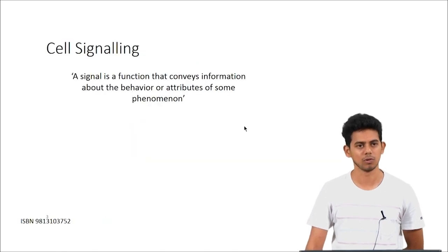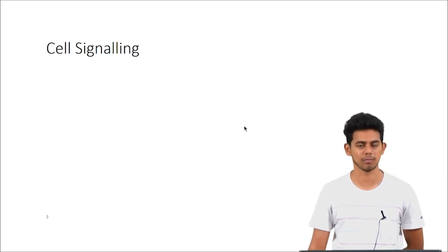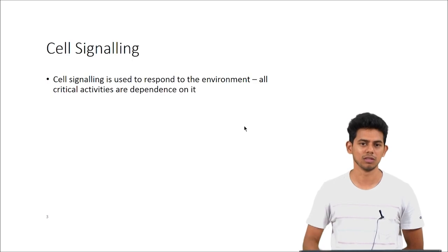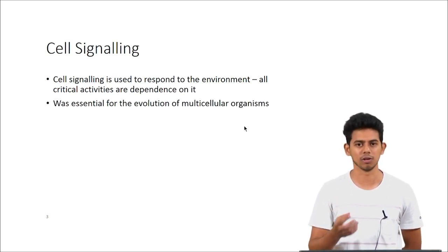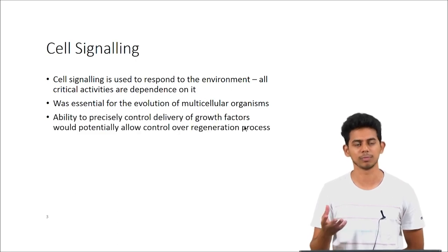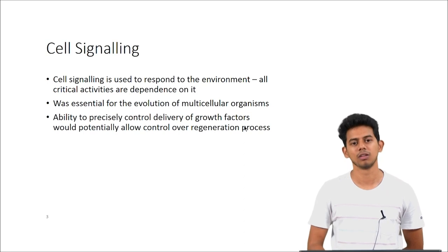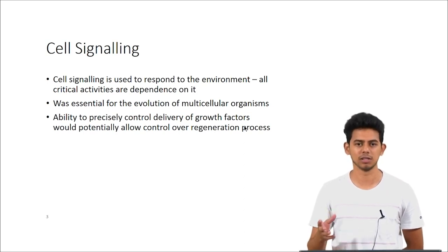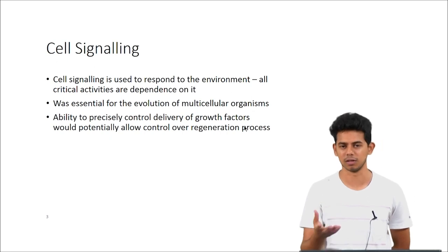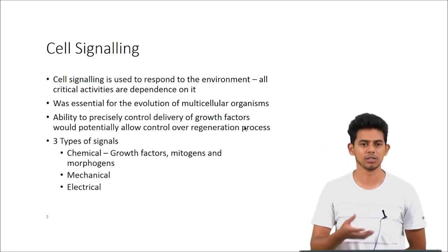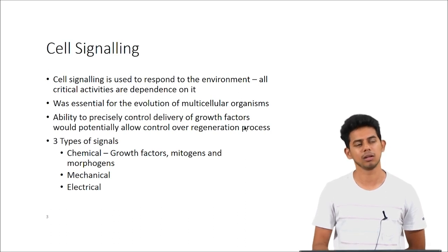What are signals? A signal is a function which conveys information. In a cell, each and every activity and function is controlled by signals. Signaling is used to communicate with other cells, and also the cell takes in signals from the environment. This was essential for multicellular organisms to evolve and is a very crucial aspect in tissue engineering. The ability to control these signals would in theory give us complete control on making a tissue grow the way we want, because that is what is naturally being carried out by the organism itself. The three kinds of signals are chemical, mechanical and electrical.